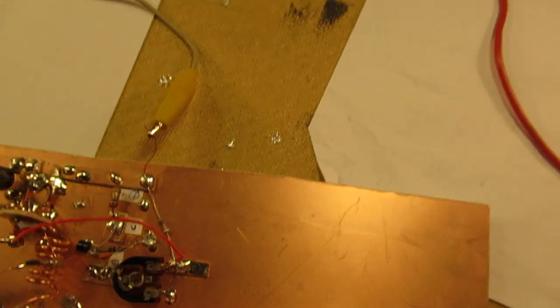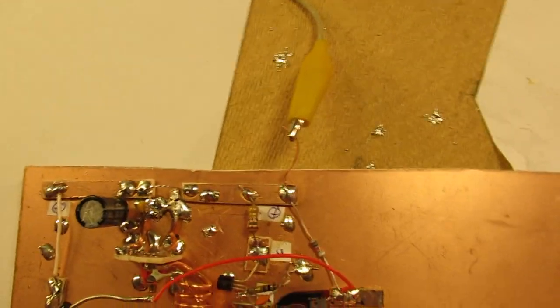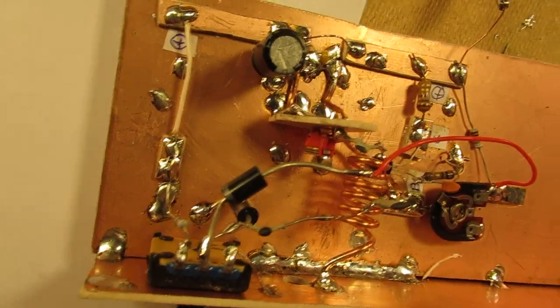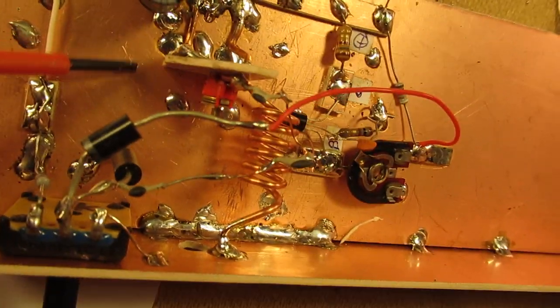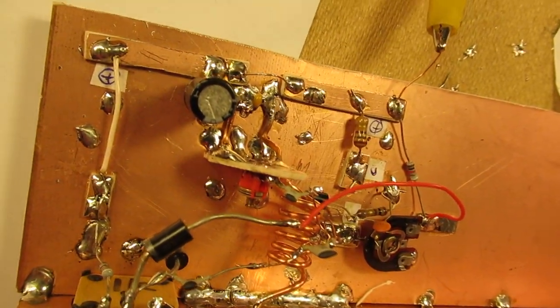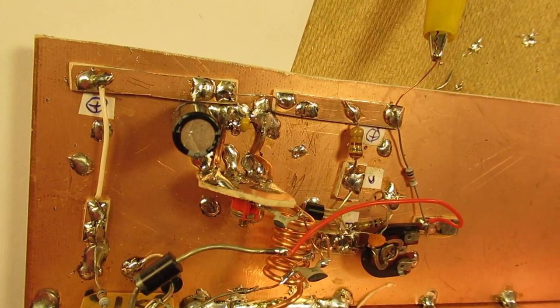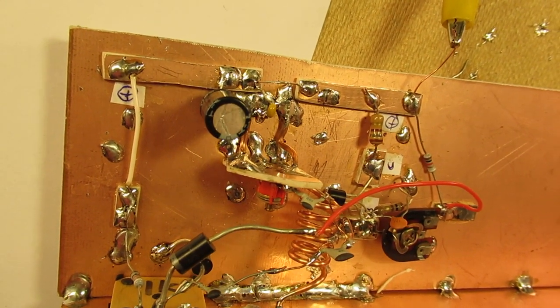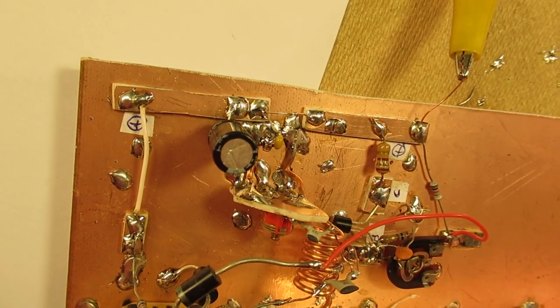Manhattan style is in fact very simple. The whole copper clad board works as a kind of mass plate. In general connected to the minus. Could of course also be connected to the positive.